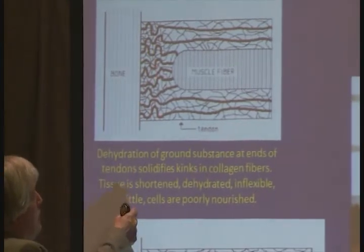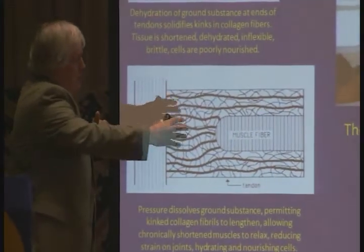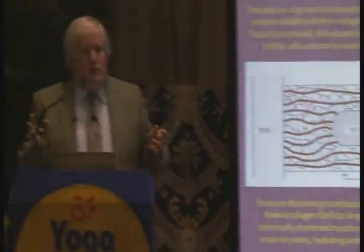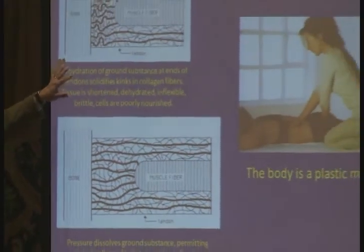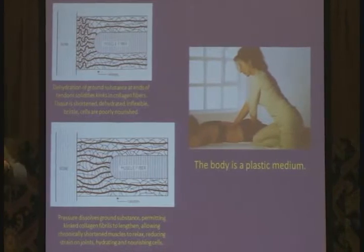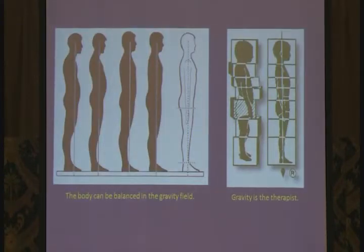If you can melt the ground substance, the kinks release, the collagen lengthens, and the muscle lengthens. You probably notice sometimes after a yoga class that everybody looks a little taller, or a little more balanced and flexible — things lengthen and parts of the musculoskeletal system work better. This was what Dr. Rolf was doing. It's not that hard to melt this ground substance — with the slightest input of energy it can fall apart, release, and relax, allowing the muscle to lengthen so the body can be balanced in the gravity field.